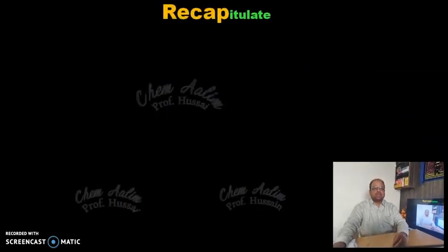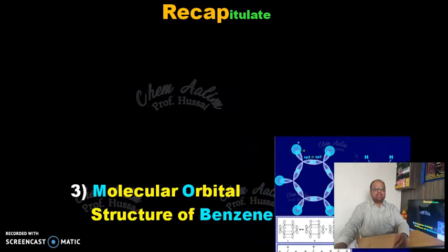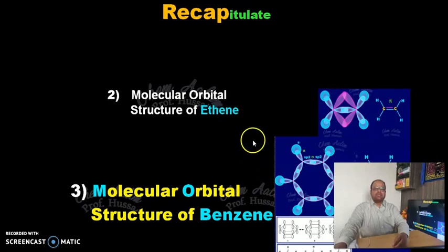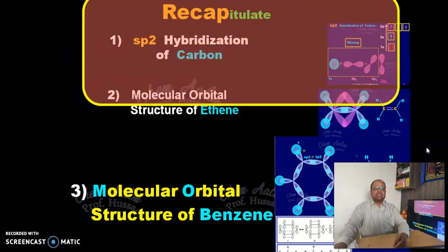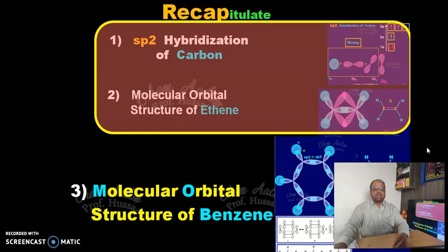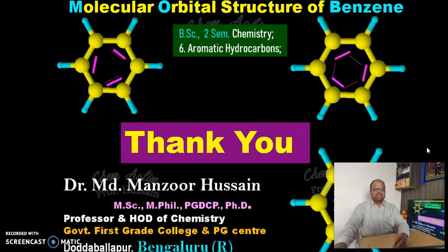Let's recap what we have done so far. We discussed the structure of benzene. To understand benzene, it was necessary to first understand ethene. To understand ethene, it was necessary to understand sp2 hybridization of carbon. However, when writing the structure of benzene in an examination, you need not include all this background information — it was given as extra information to aid understanding. You only need to write the molecular orbital structure of benzene. I hope you have understood the structure of benzene based on molecular orbital theory. Thank you very much.